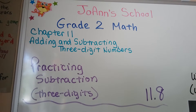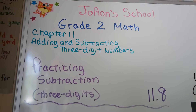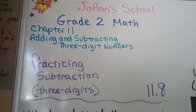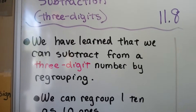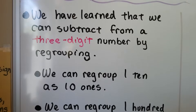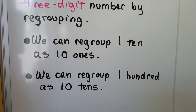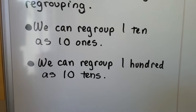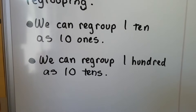We're going to be practicing subtraction of three-digit numbers. This is lesson 11.8. We've learned that we can subtract from a three-digit number by regrouping. We can regroup 1 ten as 10 ones and we can regroup 100 as 10 tens.